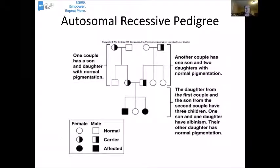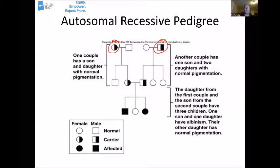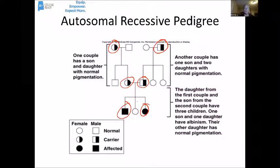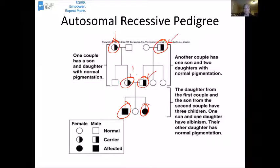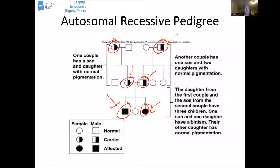Here we're looking at an autosomal recessive pedigree chart. Males can carry it, females can carry it. Eventually we end up with two people who are carriers. They have children — and this male and this female are the first two affected individuals in the whole pedigree. The previous generations don't show the trait because it's a recessive allele. Individuals who have these traits must have inherited the gene from both parents.